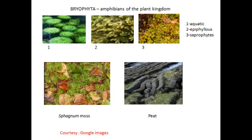Bryophytes have great ecological importance. Mosses and lichens are the first organisms to colonize rock, but they decompose the rock, making it suitable for growth of higher plants. The acid secreted by lichens and the death and decay of mosses helps in soil formation. Bryophytes grow densely, so they act as soil binders.